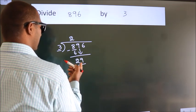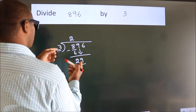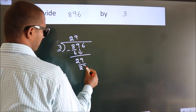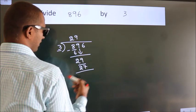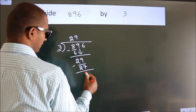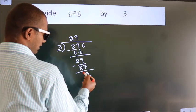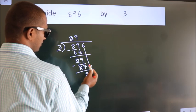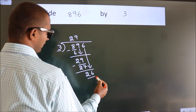A number close to 29 in 3 table is 3 9's 27. Now we subtract. We get 2. After this, bring down the beside number. 6 down. So, 26.